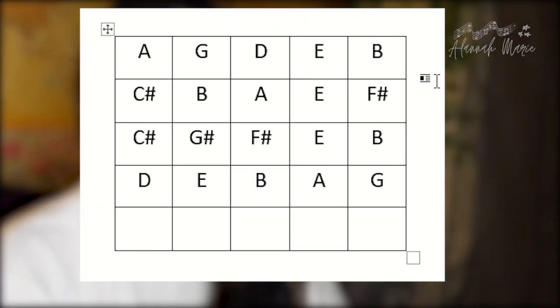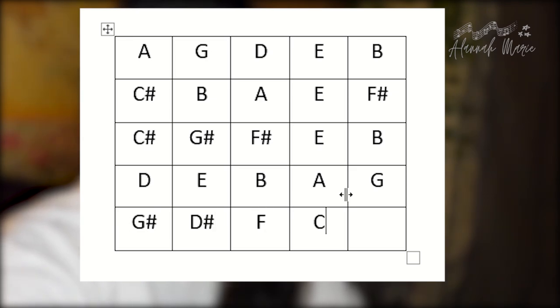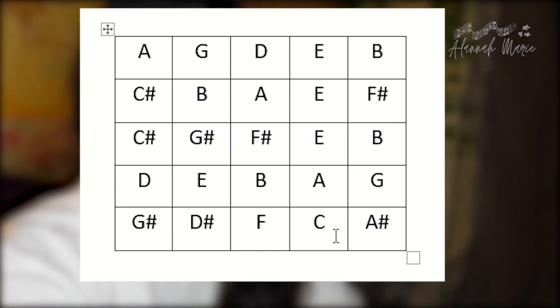Should we go up a semitone? Because that would introduce a lot more sharps. Yeah, let's go up a semitone. It's easier. D sharp is easy. E, F, B, C, A, A sharp. So we've got a few more sharps added in. We've got a lot of repeated notes. Anyway, so we have our pitches for the magic square.